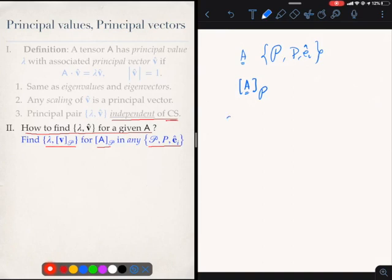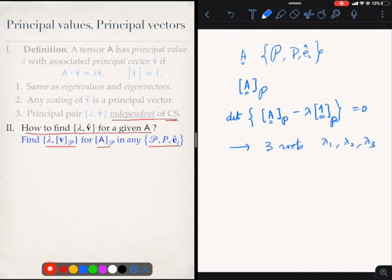So how do we do that? The steps are: find the determinant of A minus lambda times I, set it equal to 0. This will give you three roots, which we call lambda 1, lambda 2, lambda 3. Why only 3? Well, I'm considering only 3 by 3 matrices. Why only 3 by 3 matrix? Because my original tensor A operates only on three-dimensional vectors.